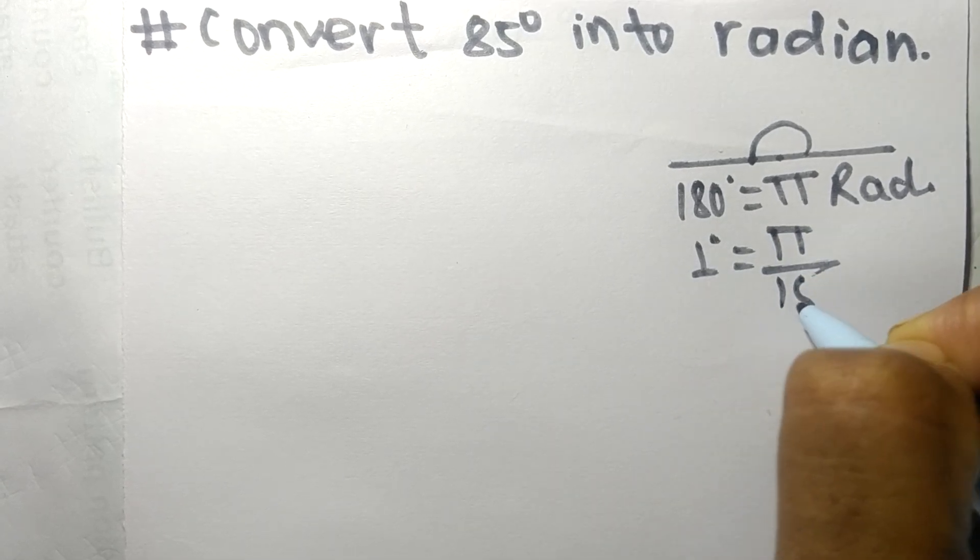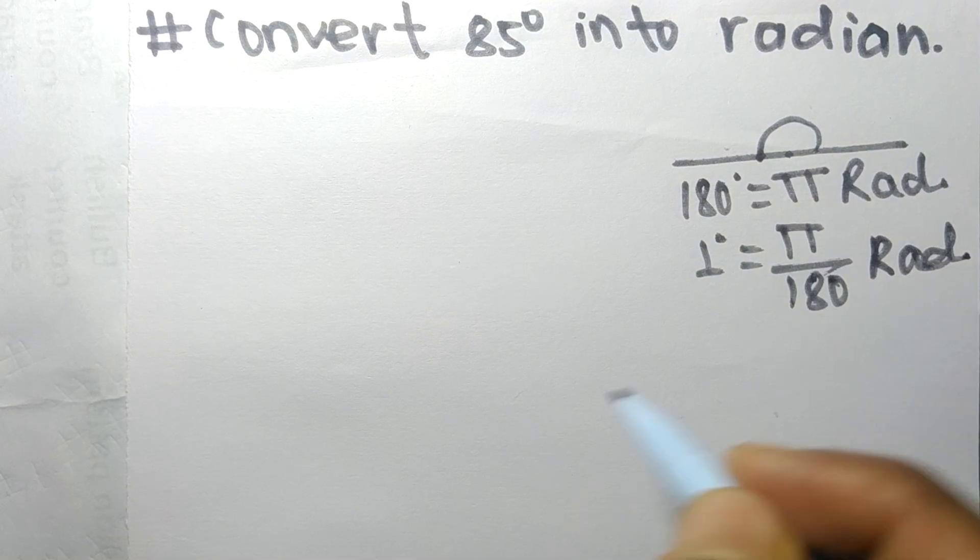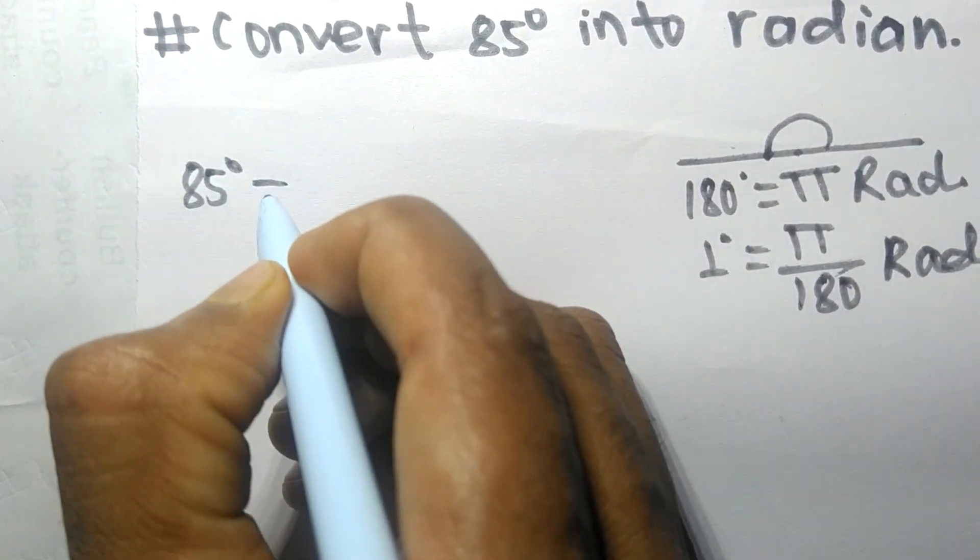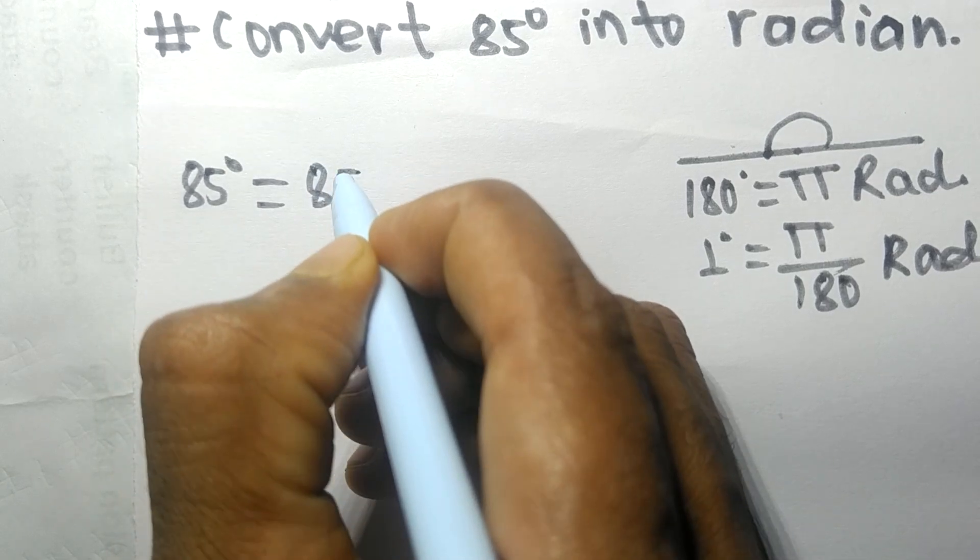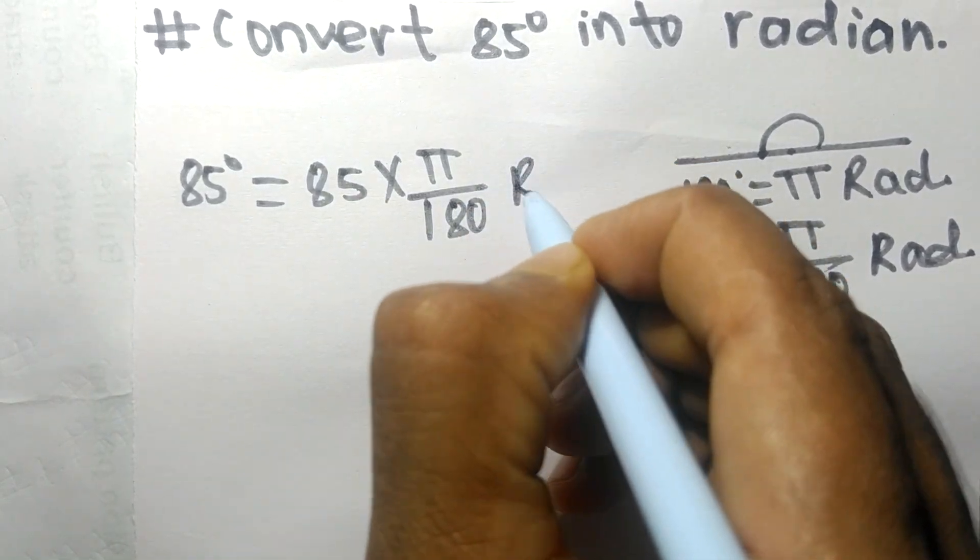In the same way, 85 degrees equals 85 times π/180 radians.